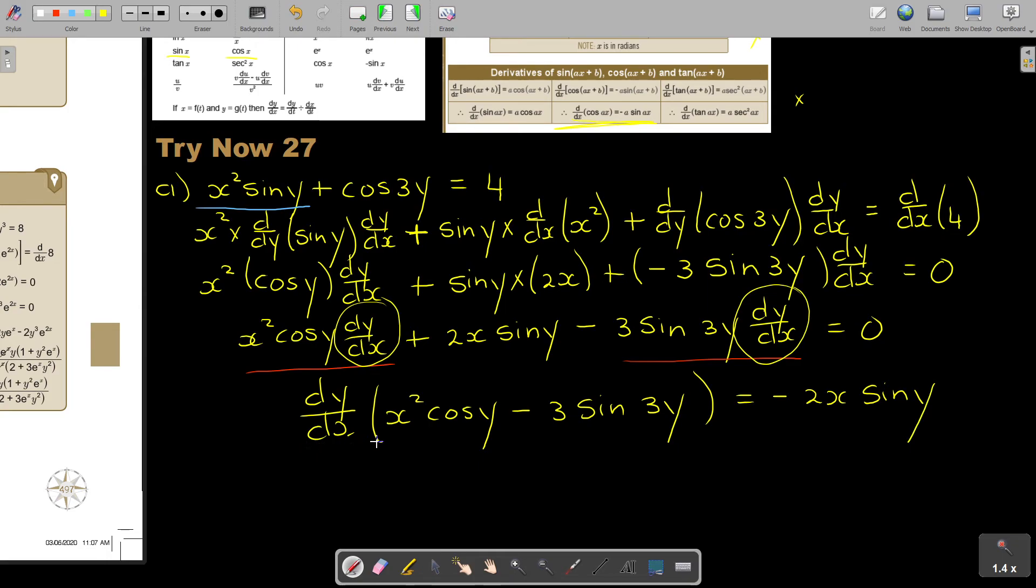I'm basically just going to divide by that and divide by that both sides. Therefore, dy over dx, and remember I divide this bracket on both sides, negative 2X sin(Y) over and then it's going to be X²cos(Y) minus 3 sin(3Y). And that is your final answer.